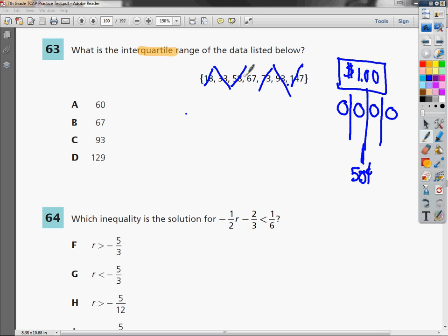And I go here. So the middle section would be 67. All I'm going to use the 67 for is to break whatever's left over into two sections. So on the left, I've got 18, 33, and 58.